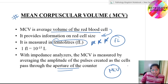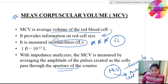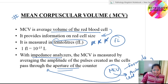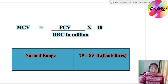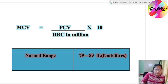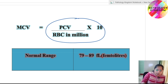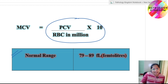MCV can be calculated manually using the formula: MCV = (packed cell volume divided by RBC in millions) × 10. It can also be calculated by an automated cell counter using the impedance principle, where the MCV is measured by averaging the amplitude of pulses as cells pass through the aperture. The normal range of MCV is approximately 79 to 89 femtoliters.